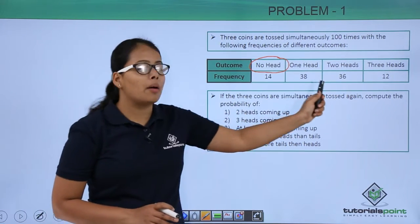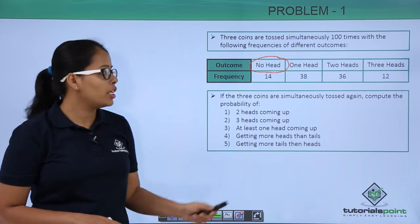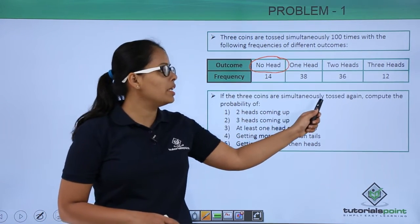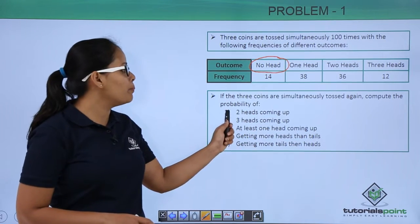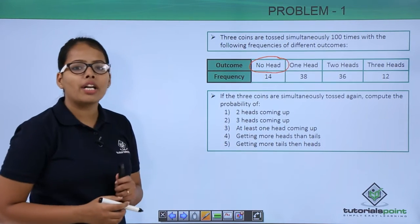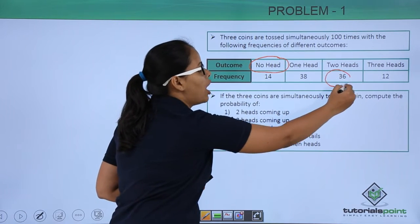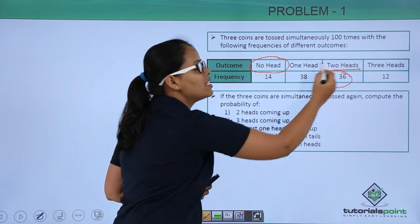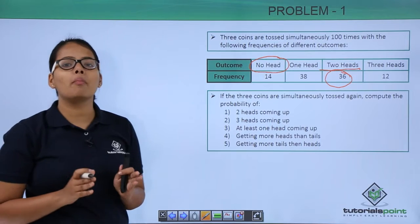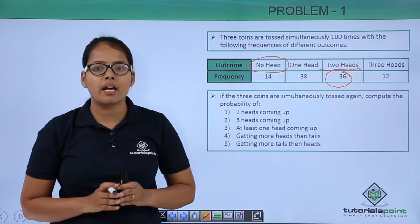When you sum 14, 38, 36 and 12, you will get 100 tosses. Now from the given data, what do you need to find out? If the 3 coins are simultaneously tossed again, you need to compute the probability of 2 heads coming up. So in what tosses did only 2 heads appear? On 36 tosses out of 100 tosses, exactly 2 heads appeared and only 1 tail appeared.